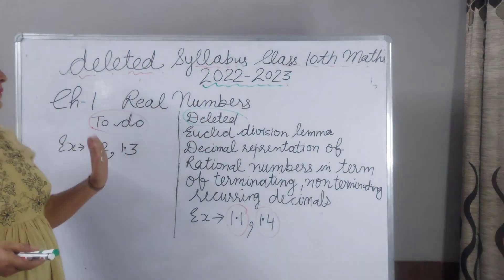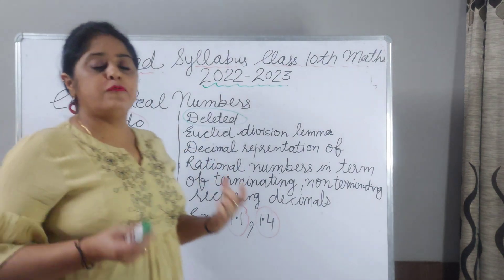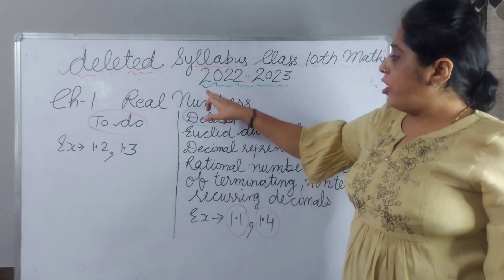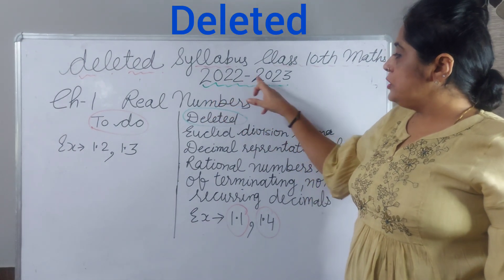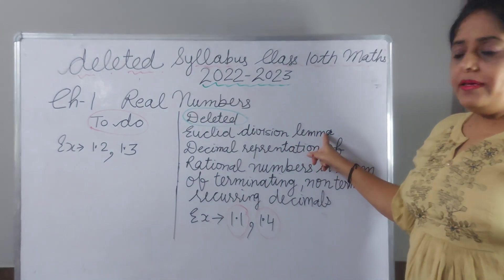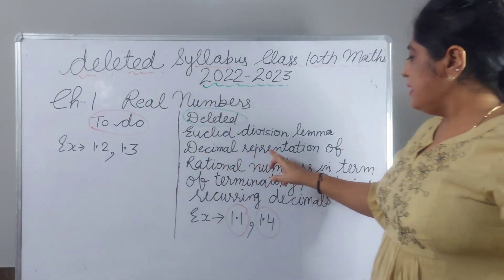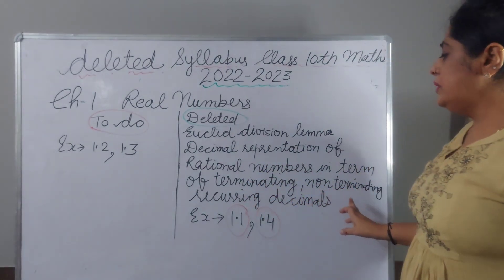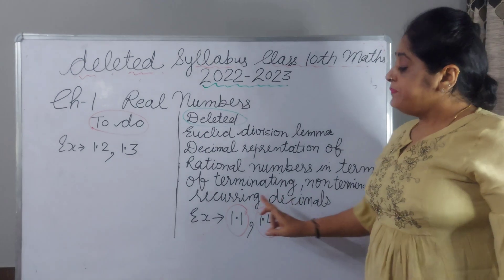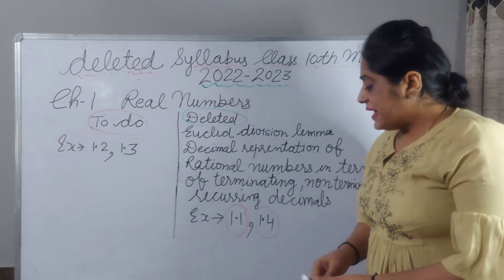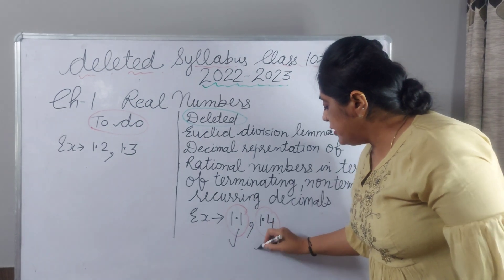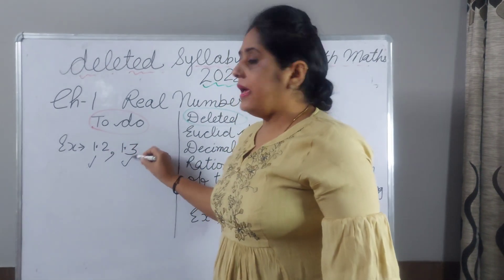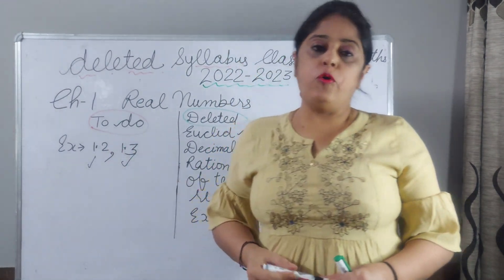Your first chapter is Real Numbers and you have to do exercise 1.2 and 1.3 only. What is deleted for session 2022-23: Euclid's Division Lemma is deleted from your syllabus, and decimal representation of rational numbers in terms of terminating and non-terminating recurring decimals. So exercise 1.1 and 1.4 are deleted. Only exercise 1.2 and 1.3.